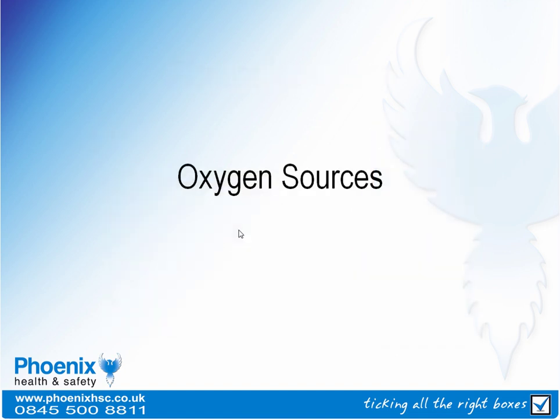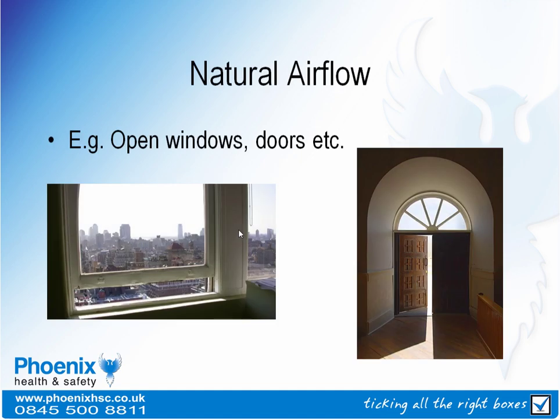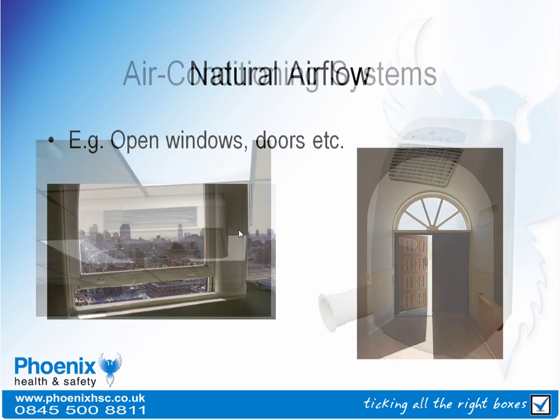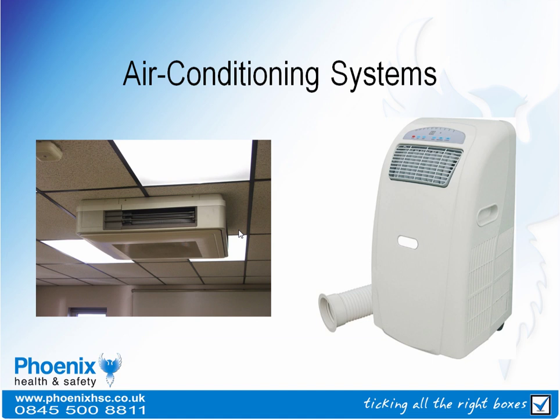And finally we will consider sources of oxygen. The main source of oxygen for a fire is in the air around us. In an enclosed building, this is provided by the ventilation system in use. This generally falls into one of two categories: natural air flow through doors, windows and other openings, or mechanical air conditioning systems and air handling systems. In many buildings there will be a combination of systems capable of introducing and extracting air to and from the building.